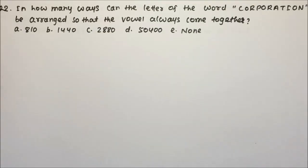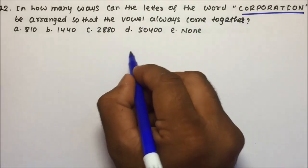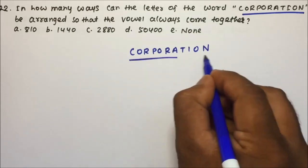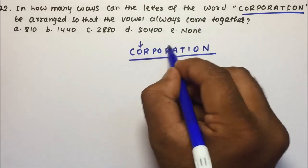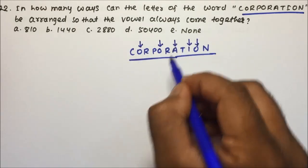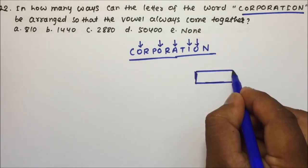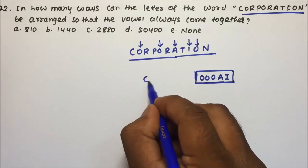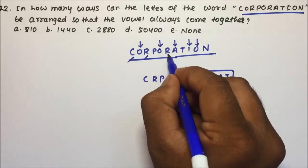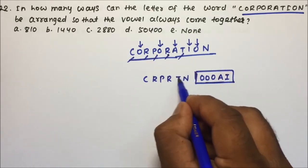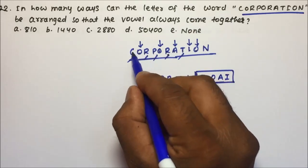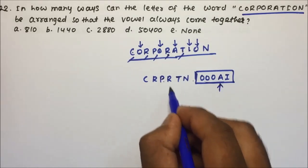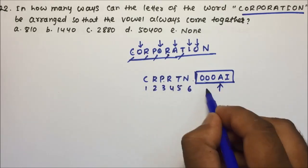Moving to question number 2: in how many ways can the letters of the word CORPORATION — C-O-R-P-O-R-A-T-I-O-N — be arranged so that the vowels always come together? How many vowels are there? O, O, A, I, O — so 5 vowels. We put all 5 vowels inside a box. The remaining consonants are C, R, P, R, T, N — that gives us 6 consonants plus the box, making 7 letters total.